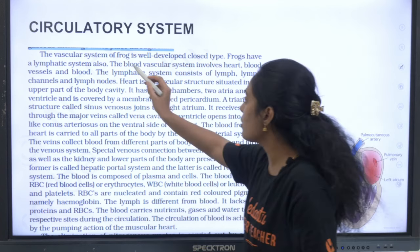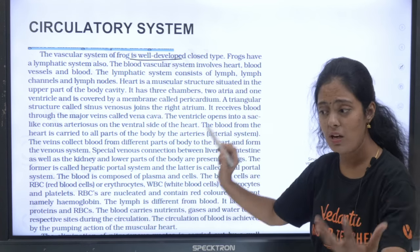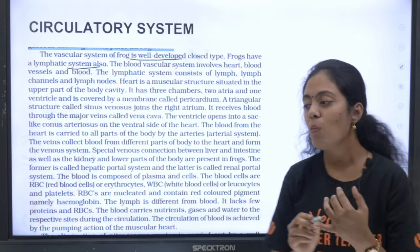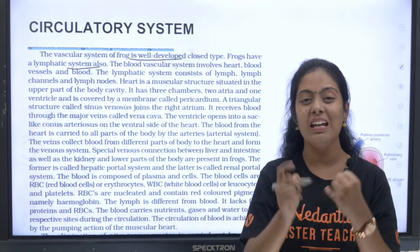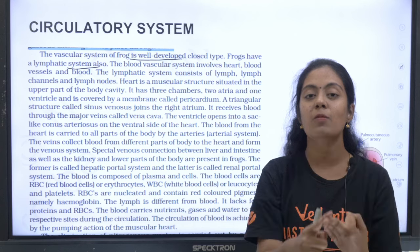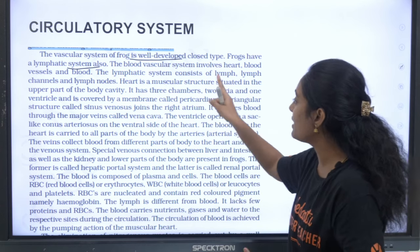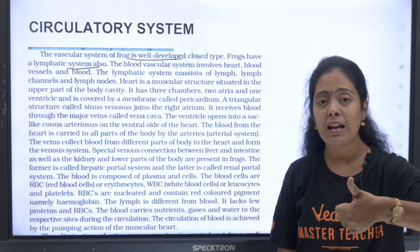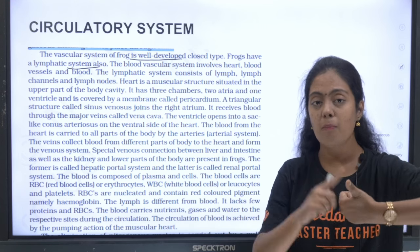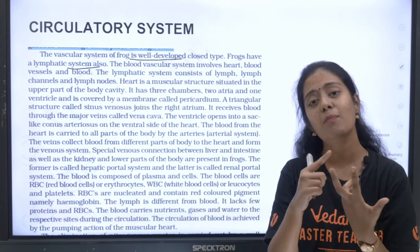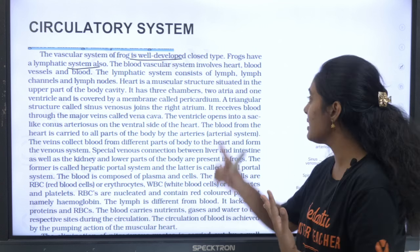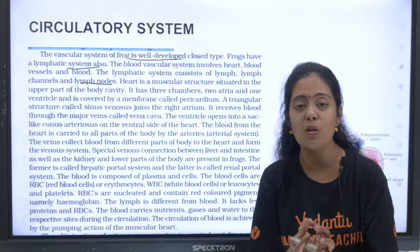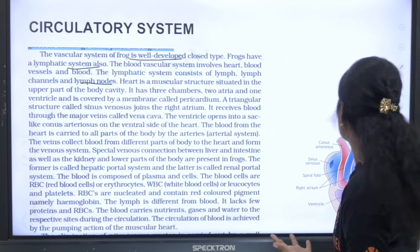The vascular system of frog is well developed and closed type. The blood vascular system contains heart, blood, and blood vessels. The lymphatic system consists of lymph, lymph channels, and lymph nodes. The heart is a muscular organ situated in the upper part of the thoracic region, with two atria and one ventricle, covered by a membrane called pericardium.